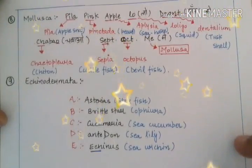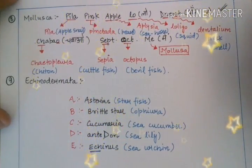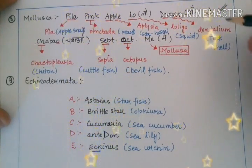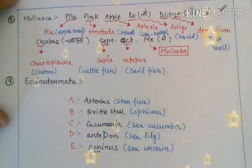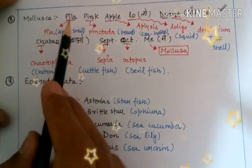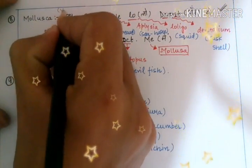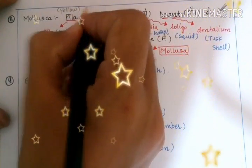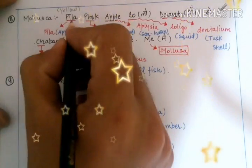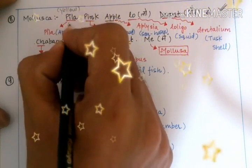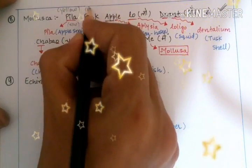The next phylum is Mollusca. It has many examples and it is very difficult to put them all in a single trick to make a sensible sentence, but I have tried. So: 'Pila pink apple' — Pila means yellow-green, and pink apple refers to two colors, since some apples are raw so they are pale and the rest are reddish or pinkish.